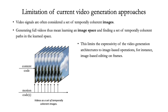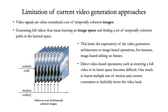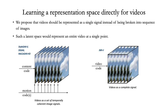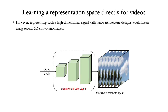Direct video-based operations like video inversion or future video segment prediction need architectures that model temporal and spatial constraints, ensuring that they are coherently learned. We propose that videos, like images, should be represented as a single signal. This would mean a latent space where each latent represents a complete video. However, such a representation is not straightforward.